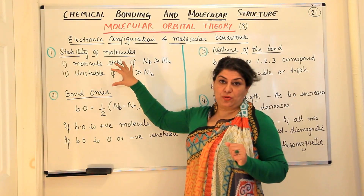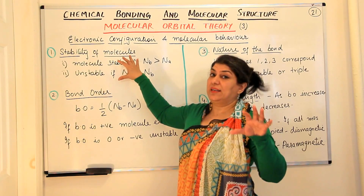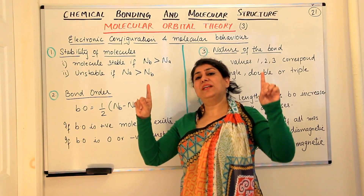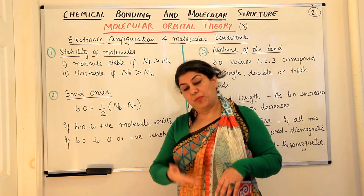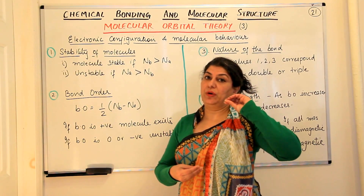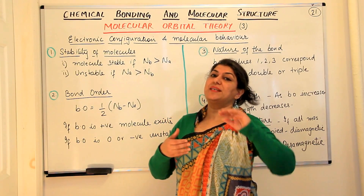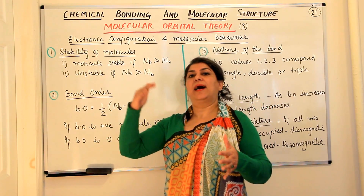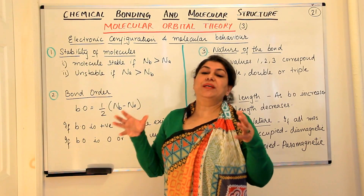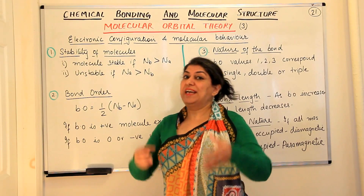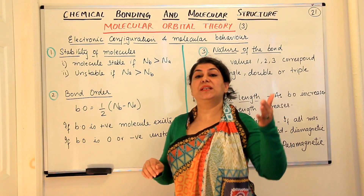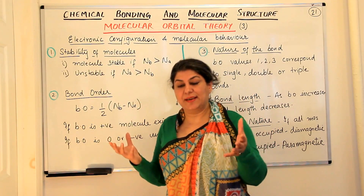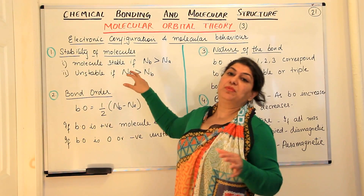The first thing we learn from a molecule's electronic configuration is the stability of the molecule. When two atomic orbitals combine, they form a bonding molecular orbital and an anti-bonding molecular orbital. Electrons in bonding molecular orbitals contribute to stability, while anti-bonding molecular orbitals are higher in energy and lead to instability. If the number of electrons in bonding molecular orbitals is more than in anti-bonding, the molecule should be stable.